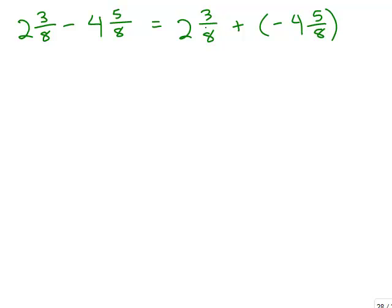Now we're adding two mixed numbers, but one is negative and one is positive. I have a video where we already went over how to add with positive and negative mixed numbers with a common denominator. You can either do this by keeping everything as mixed numbers or rewriting as improper fractions. For this example, I'm going to write both of them as improper fractions because the numbers are small enough.